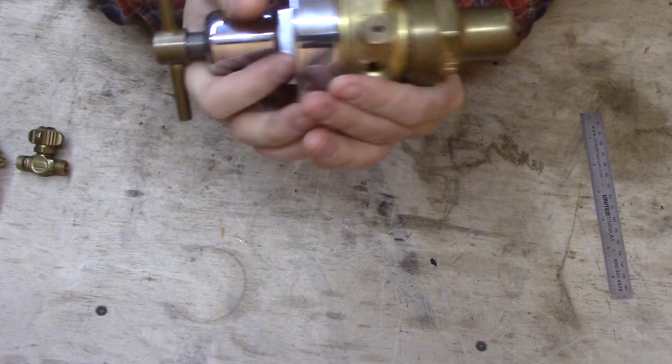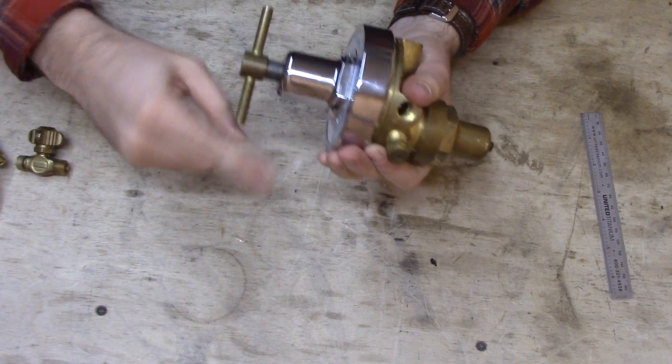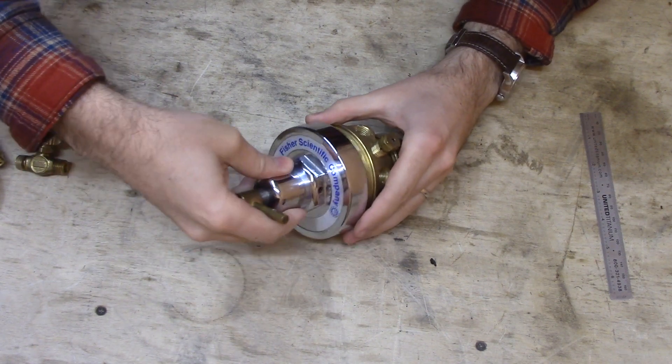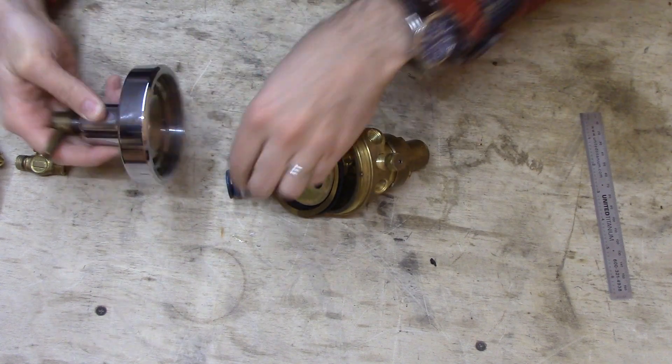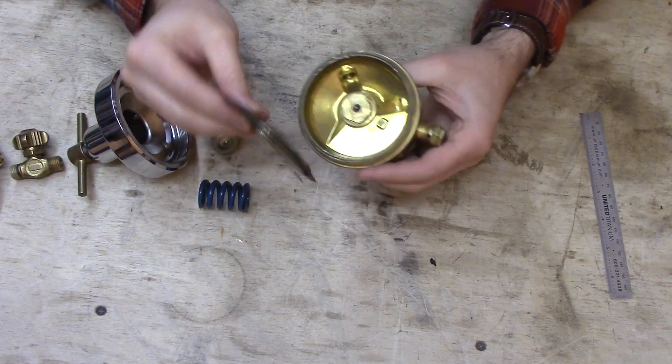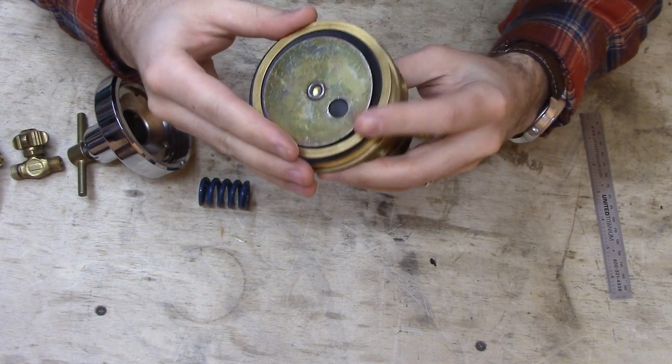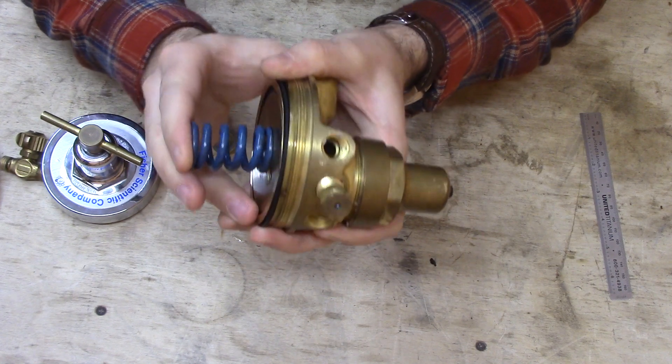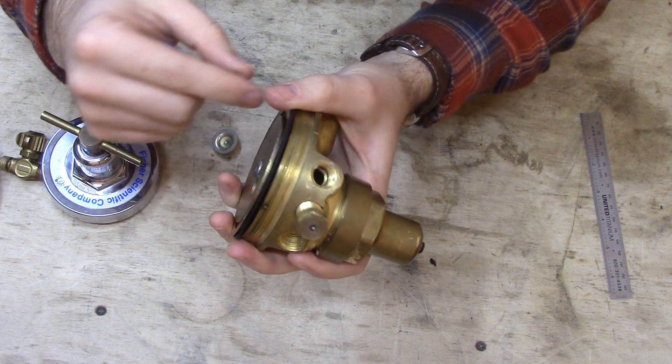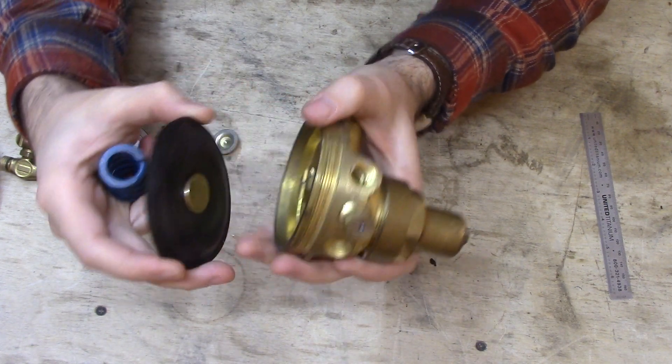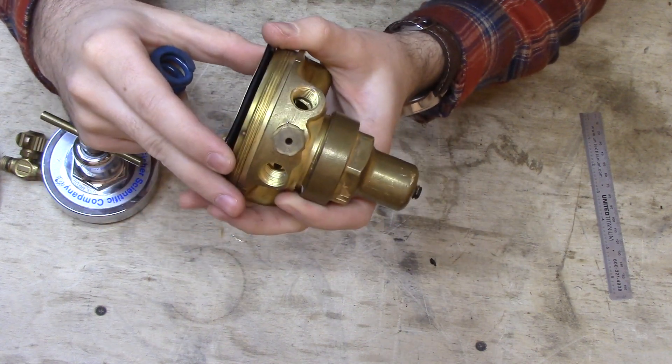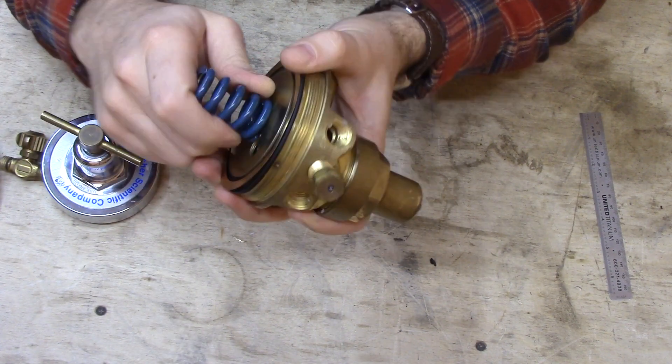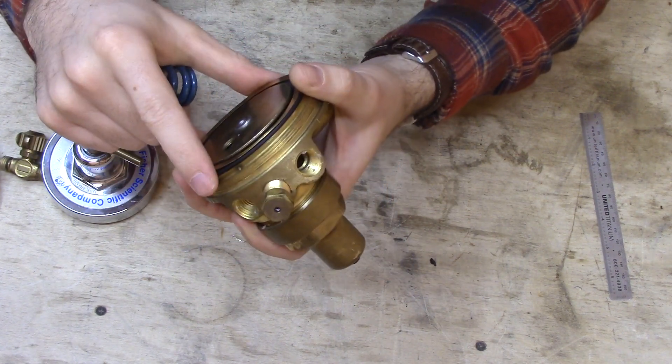If I unscrew this front part, this is where the action really happens in a regulator. What you see is a big spring and a rubber diaphragm. So what happens is when you turn this knob on the front, you adjust the pressure that's pushing on this spring. And the outlet gas pushes on the back side of this diaphragm, so it tries to push this diaphragm out and the spring pushes it back in. And at some point those two forces are equal, and that sets the output regulator pressure.